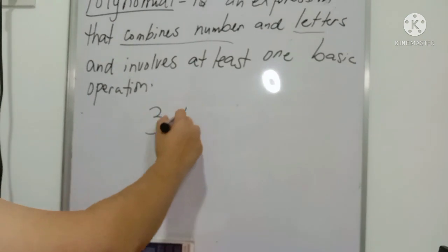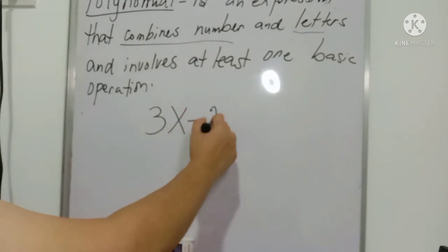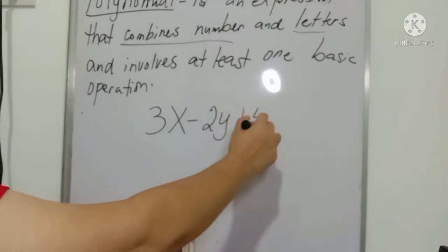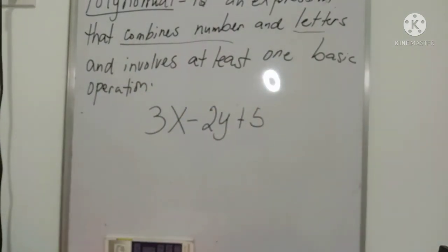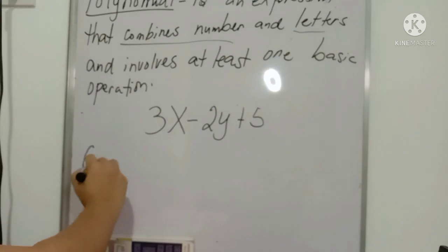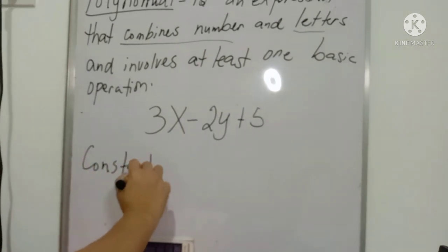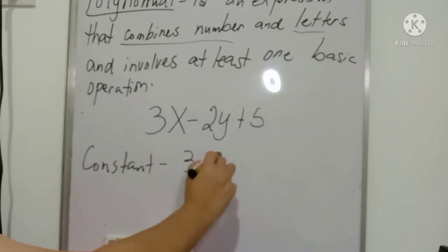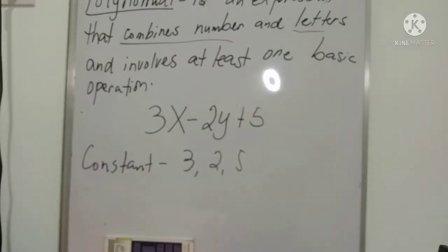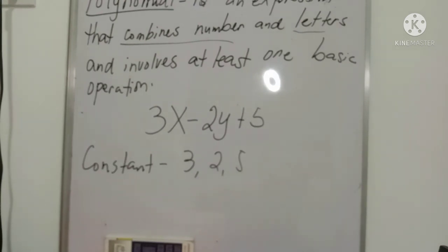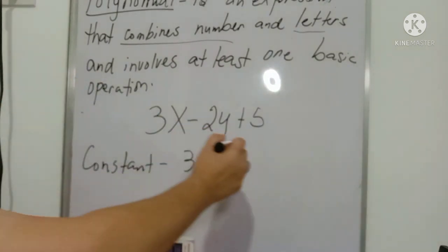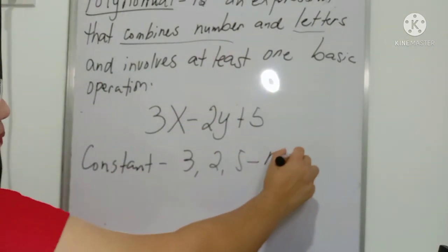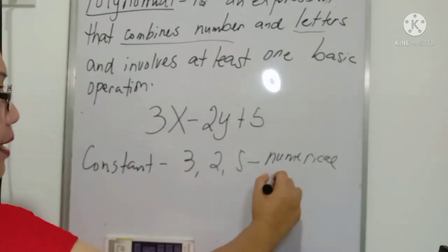So I have here the example: 3x minus 2y plus 5. If we are going to identify the constant here — three, two, and five are what we call constants. A constant is a symbol that is fixed and assumes one specific value. Sometimes it is also called the numerical coefficient.